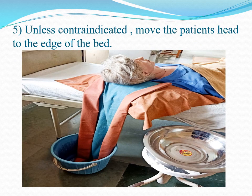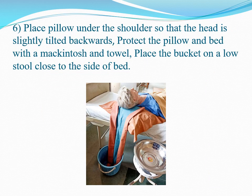Step 5: Unless contraindicated, move the patient's head to the edge of the bed. Step 6: Place a pillow under the shoulders so that the head is slightly tilted backwards. Protect the pillow and bed with a mackintosh and towel. Place the bucket on a low stool close to the side of the bed.